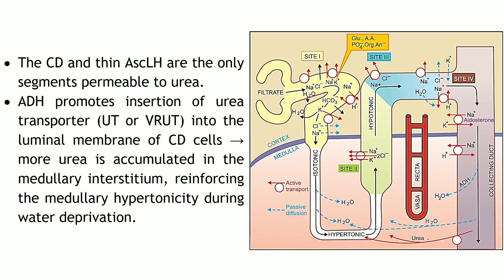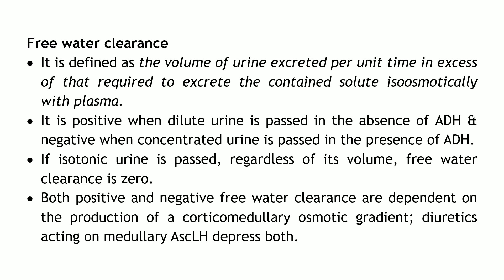Another substance moving is urea. The ascending limb of the loop of Henle is permeable to urea, and the CD cells also have specialized transporters inserted in their walls for urea reabsorption. Whatever urea is secreted helps maintain the osmotic gradient — it is reabsorbed, moves along the tubules, gets secreted again and reabsorbed again, helping maintain the osmotic gradient.